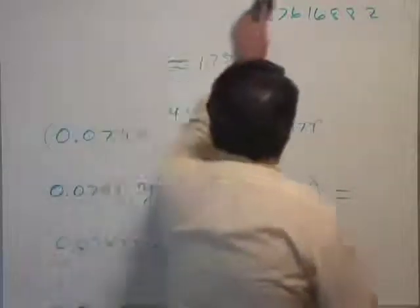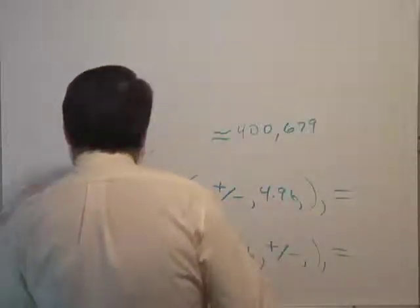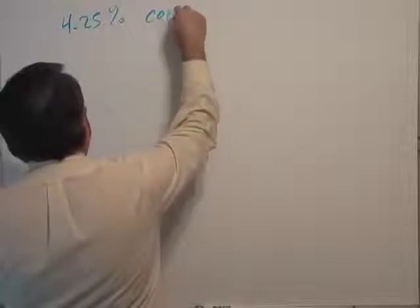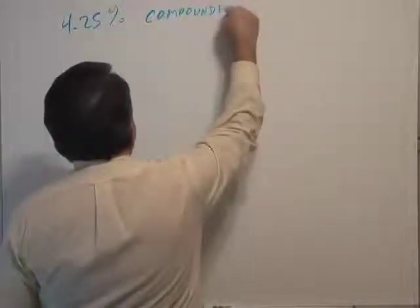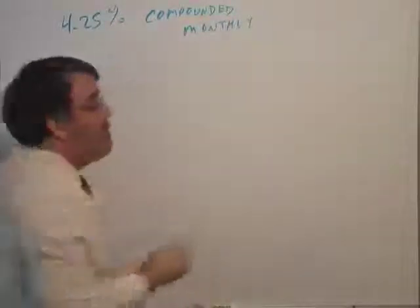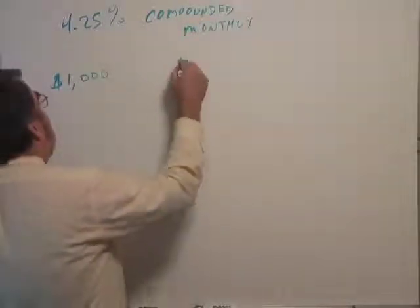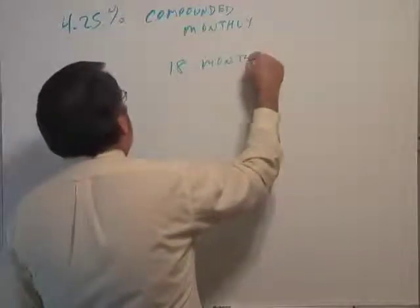A compound interest problem, for example. Suppose you invest money in a certificate of deposit in a bank, a CD. And I don't know what the interest of those things are paying these days. But suppose that the annual interest rate is 4.25%, 4.25% compounded monthly. And suppose that you invest $1,000 in the CD and you're committed to invest it for 18 months.